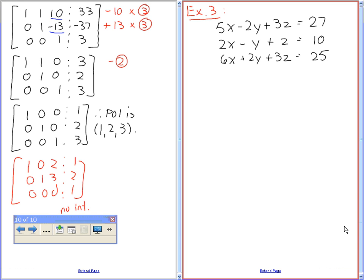I'm going to quickly do this as 5, negative 2, 3, 27. 2, negative 1, and 1, and 10. 6, 2, 3, and 25.